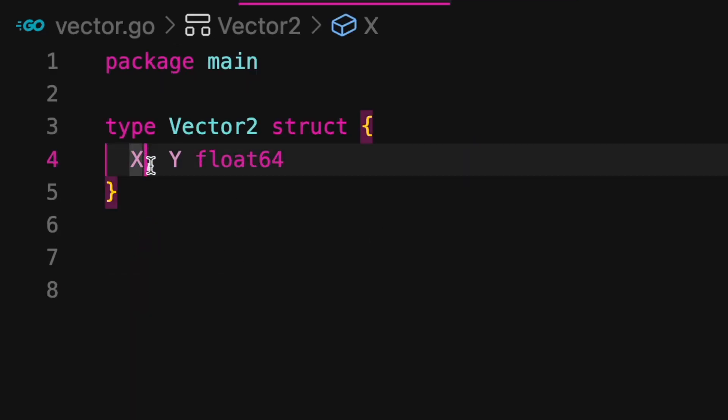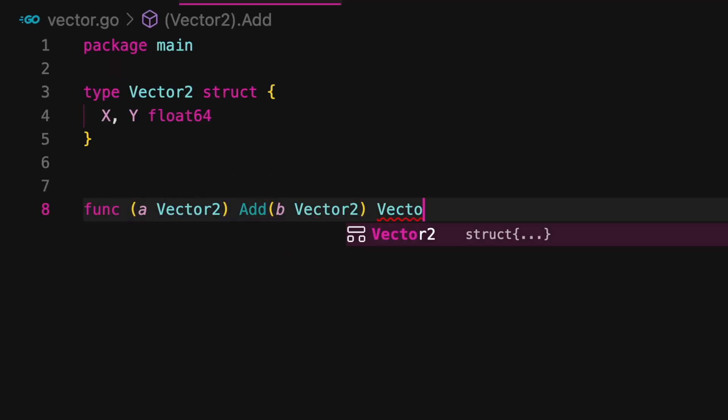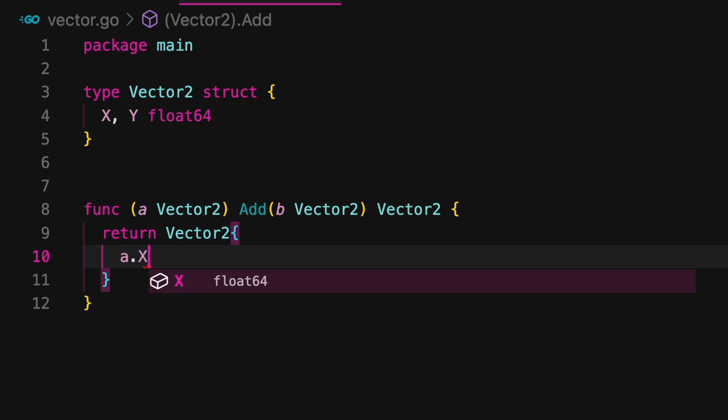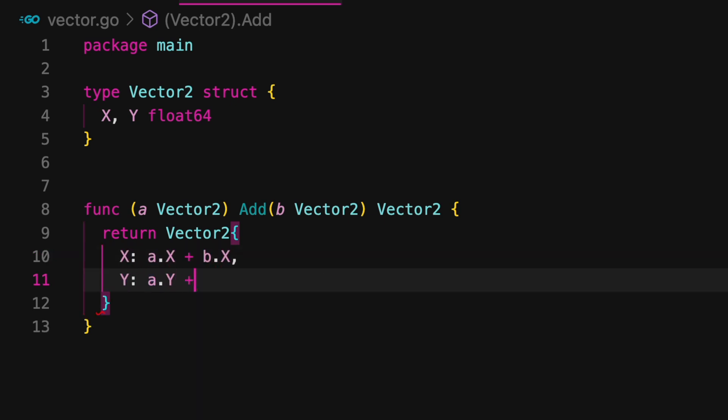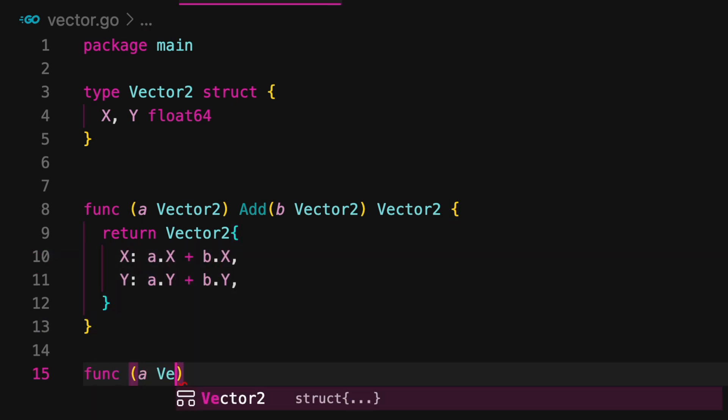Since we're making a 2D vector, we all need to keep track of the x and y values of this vector, so now for the operations. Some basic ones we definitely need will be adding vectors, subtracting, and multiplying them. But not together, but by a scalar. This is so we can scale our vectors freely.